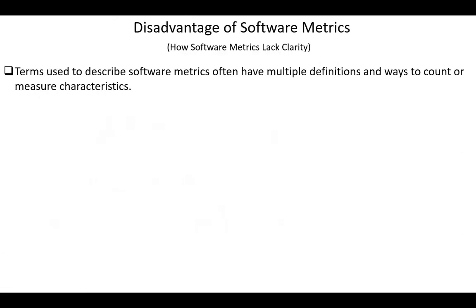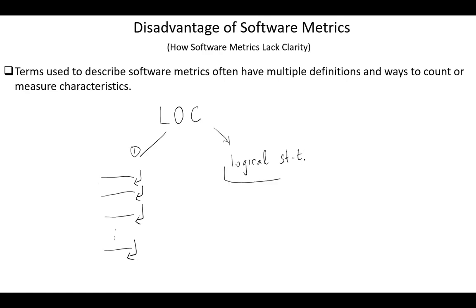Next, disadvantages of software metrics and how software metrics lack clarity. Terms used to describe software metrics often have multiple definitions and ways to count or measure characteristics. For example, line of code is a common measure of software development, but there are two ways to count each line of code. The first one is to count each physical line that ends with a carriage return. This count may include lines of dead code or commands, and this is why some software developers do not accept this method of counting. Another way: each logical statement could be considered as a line of code. This means that a single software package could have two very different line of code counts, depending on which counting method is used. This makes it difficult to compare software simply by lines of code or any other metric without a standard definition. And this is why establishing a measurement method and consistent units of measurement to be used throughout the life of the project is very important.